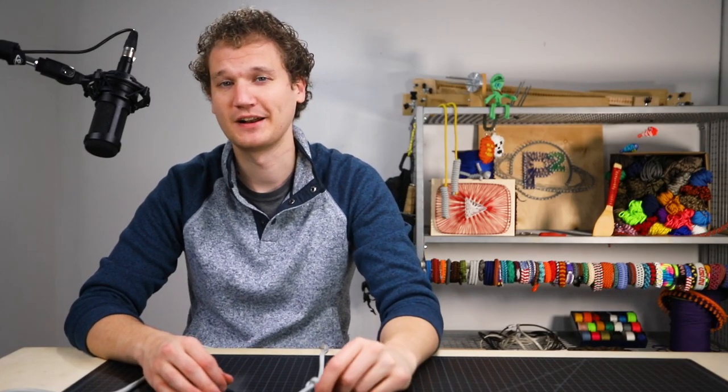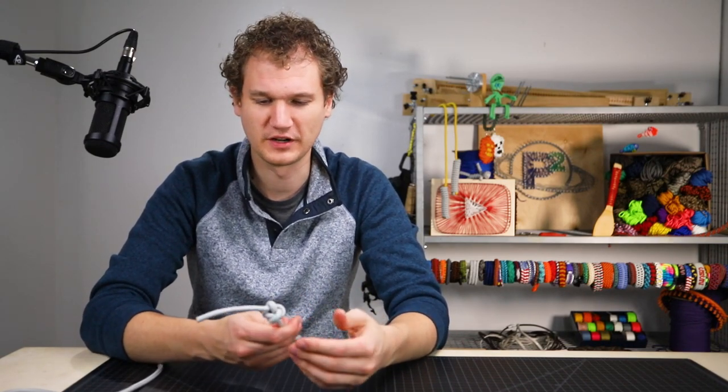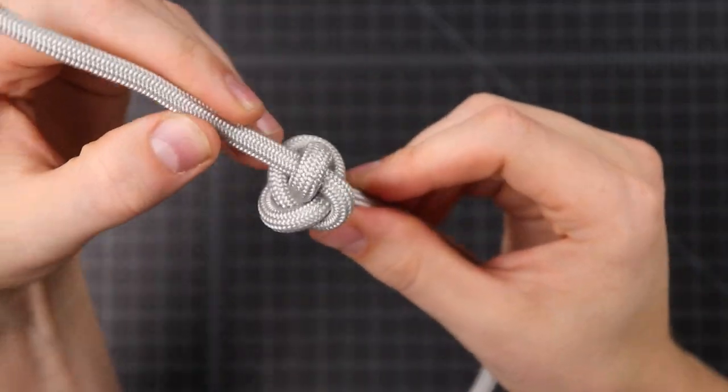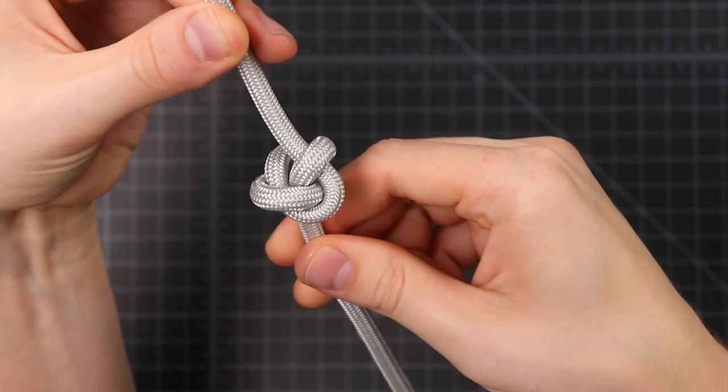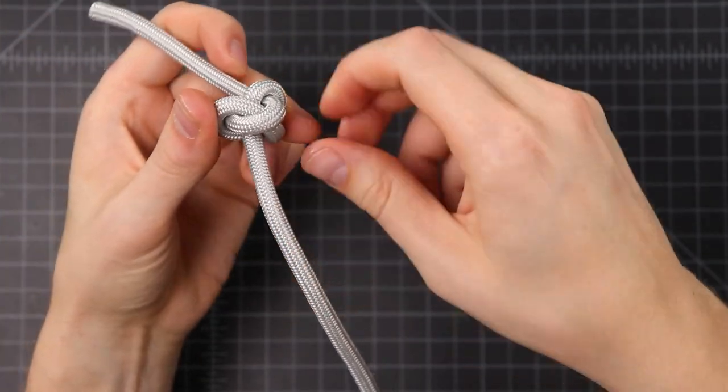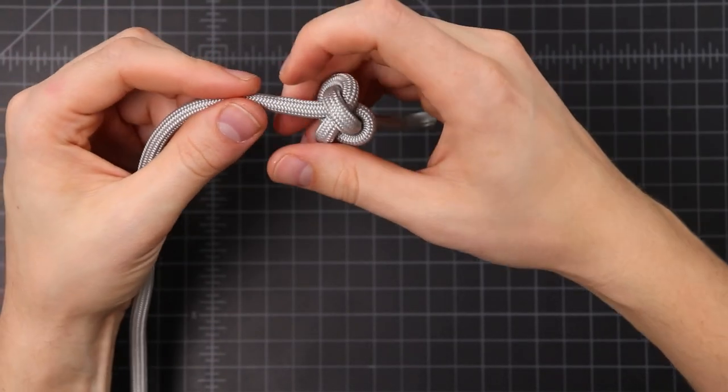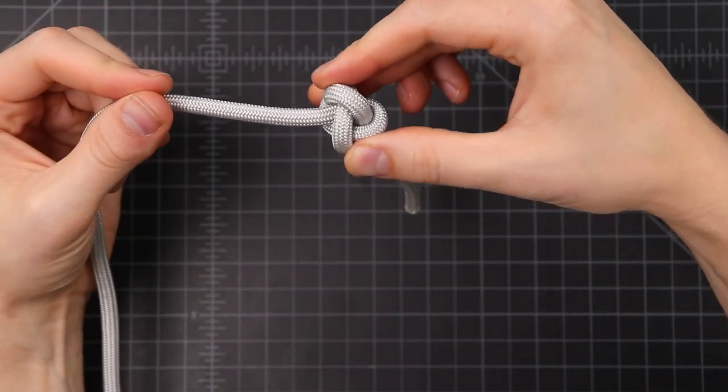This next one is the Ashley stopper knot. This one was popularized by Clifford Ashley. I think there's also some other names for it, but this is what it's come to be known as now. It's not a pretty looking knot. It's very irregular and just kind of looks like a jumbled mess. But it's one of the best stopper knots because of how wide it is. So you can thread your rope through a piece of hardware and have that nice wide knot to keep it from pulling back out.